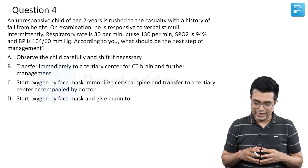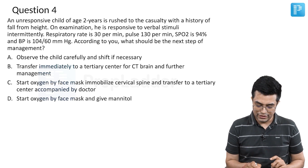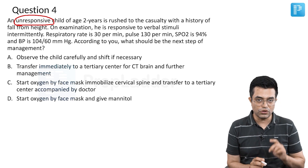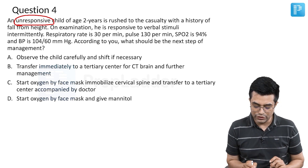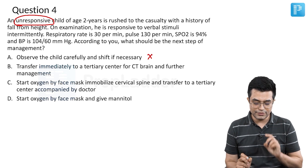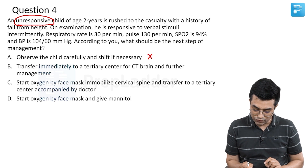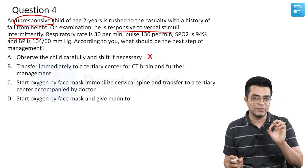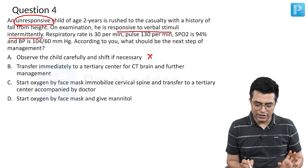The child is unresponsive — something is clearly wrong. So only observing the child carefully and shifting if necessary cannot be the answer. It is an unresponsive child with a history of fall from height, responsive to verbal stimuli only intermittently, so he is not in the best of cognition.